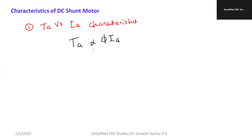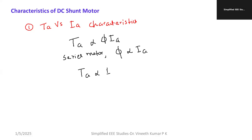We have already derived the torque equation. In the case of series motor, the flux is directly proportional to the armature current. Therefore, armature torque can be written as IA into IA, which means armature torque is directly proportional to IA squared.